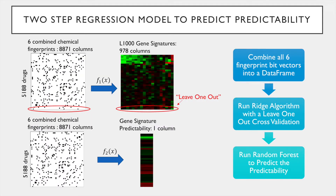The approach we took for predicting the predictability of each small molecule is a two-step regression model. Before we get to the regression model, the first step was to combine all six fingerprint bit vectors into one data frame. There were a few different combinations of fingerprints that were assessed, but using all six proved to have the best results. Using the fingerprints as attributes and the L1000 gene expression signatures as the target vectors to learn, we ran the ridge algorithm with a leave-one-out cross-validation. This allowed us to obtain a predicted gene expression pattern for each small molecule.